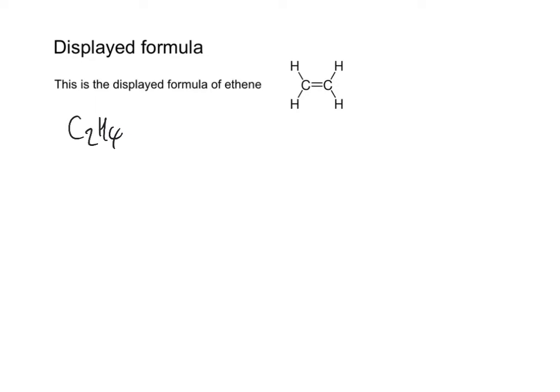I need to remember that an alkene has a double bond. I would start off by drawing my two carbon atoms, and then because I know it's an alkene, I'm going to straight away join those together with a double covalent bond. Every carbon atom has four covalent bonds — so counting them up: one, two, three, four on the left carbon, and each bond in the double bond counts as one bond.